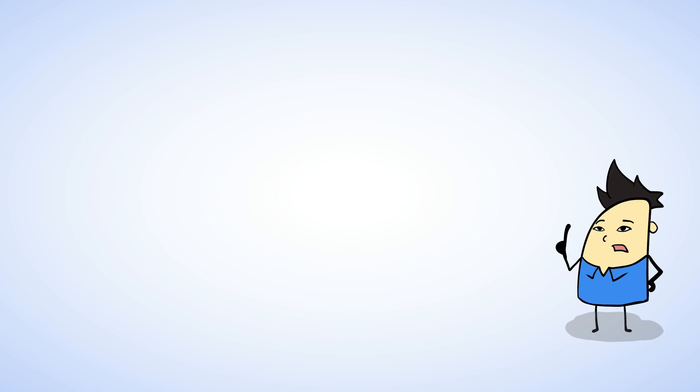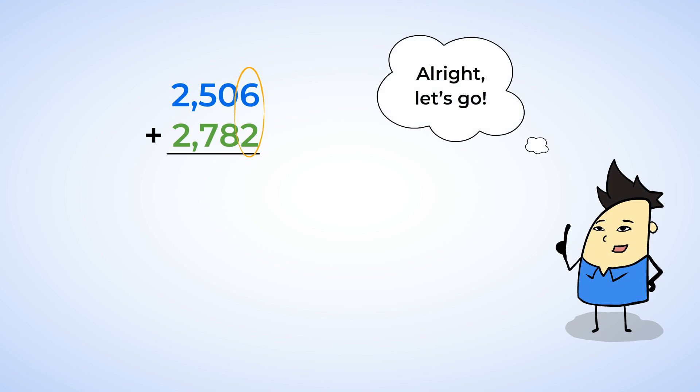Using the standard algorithm, let's add 2,506 and 2,782. Now first, we're going to start on the right side with the smallest place value. As we add, we're going to move to the left to the higher place values. Alright, let's go.